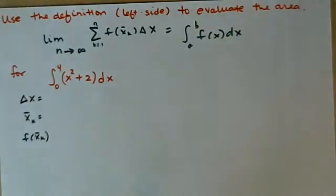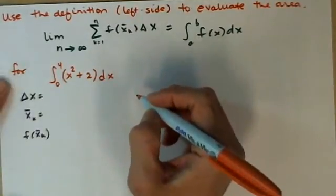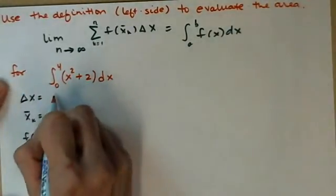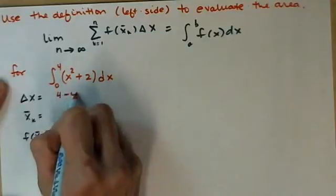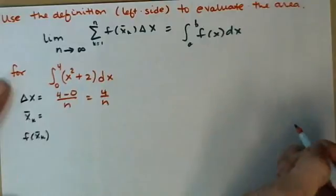So some pieces I need. I need to know, well what's delta x going to be? So b minus a over n, so b is 4, a is 0, so 4 minus 0 over n, so delta x is 4 over n.